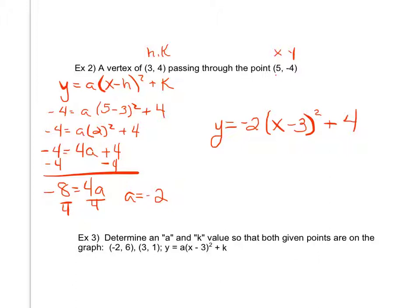Notice I could, if I were asked to change this to standard form, I could square this, distribute the minus 2, and combine like terms to put it in that ax squared plus bx plus c form as well.